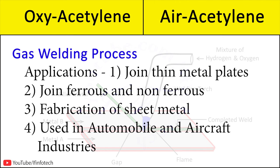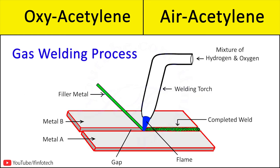Here are some applications of the gas welding process. It is used to join thin metal plates and both ferrous and non-ferrous metals. It is mostly used in fabrication of sheet metals, and is widely used in automobile and aircraft industries. It is easy to operate and does not require a high-skill operator. The equipment cost is low compared to other welding processes like MIG welding and TIG welding.